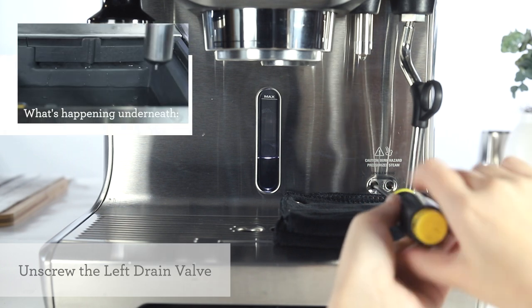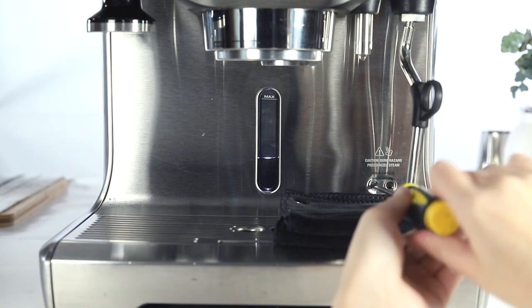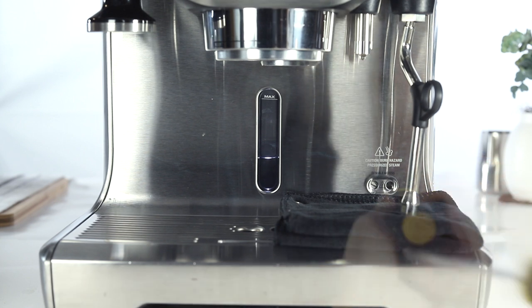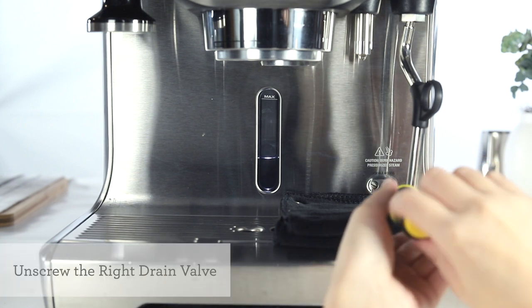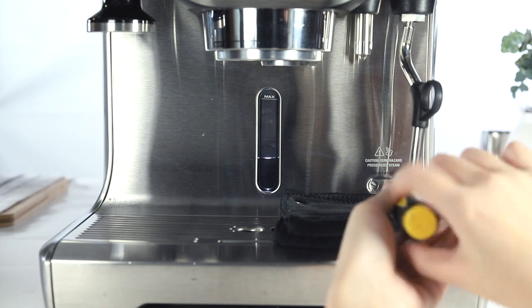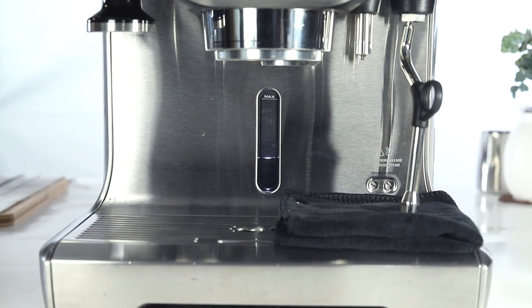Unscrew the left drain valve counterclockwise to drain the coffee boiler. Unscrew the right drain valve counterclockwise to drain the steam boiler. Please be careful during this step, as contents from the steam boiler may be hot. Allow approximately 5 minutes for both boilers to drain completely.